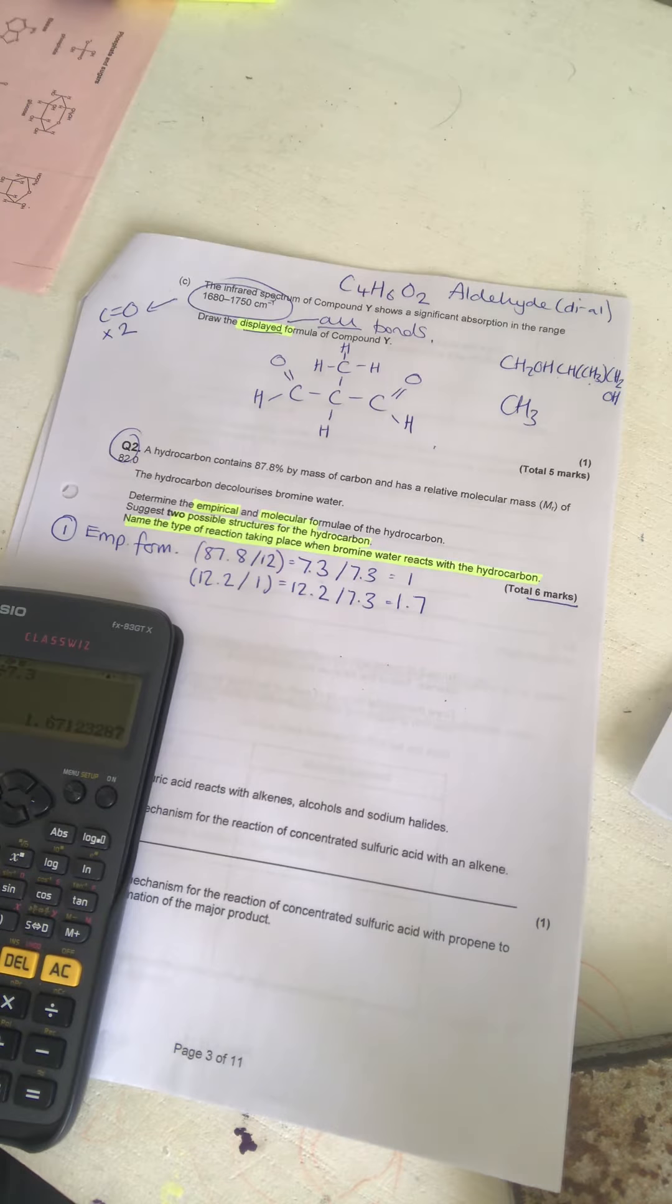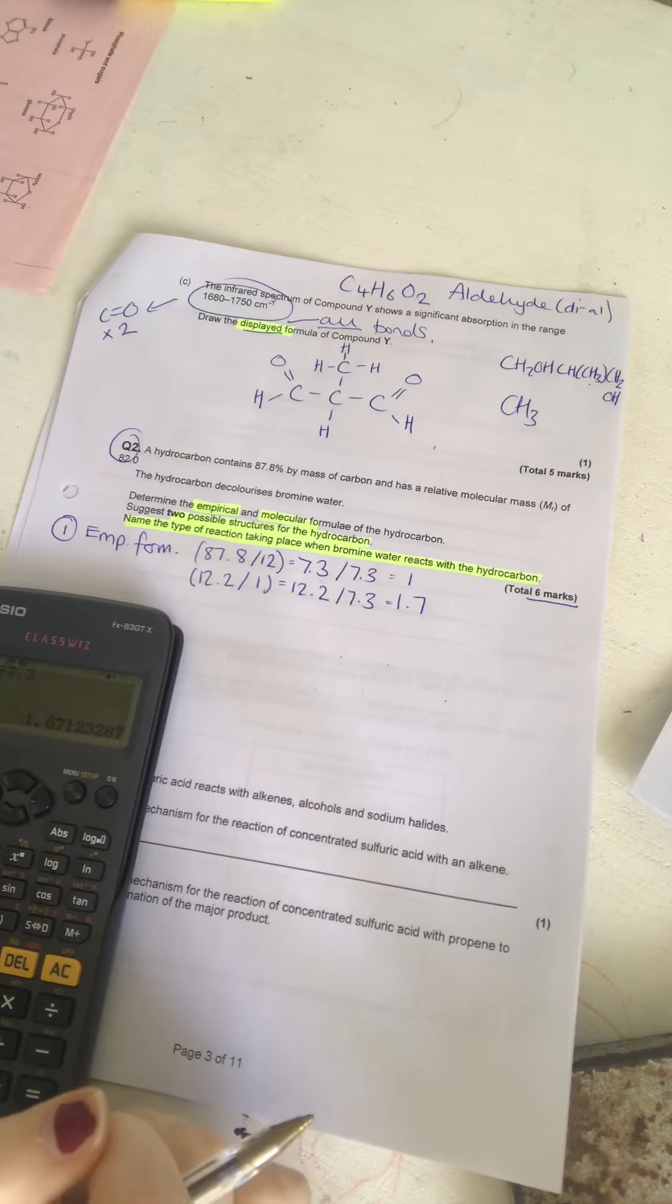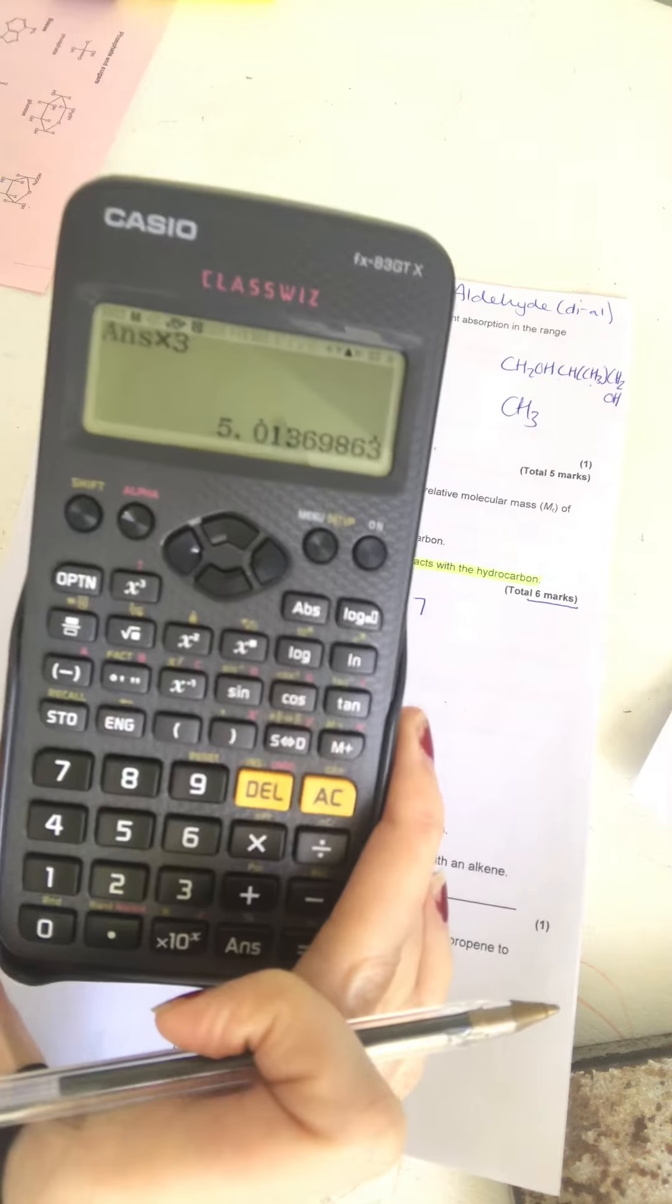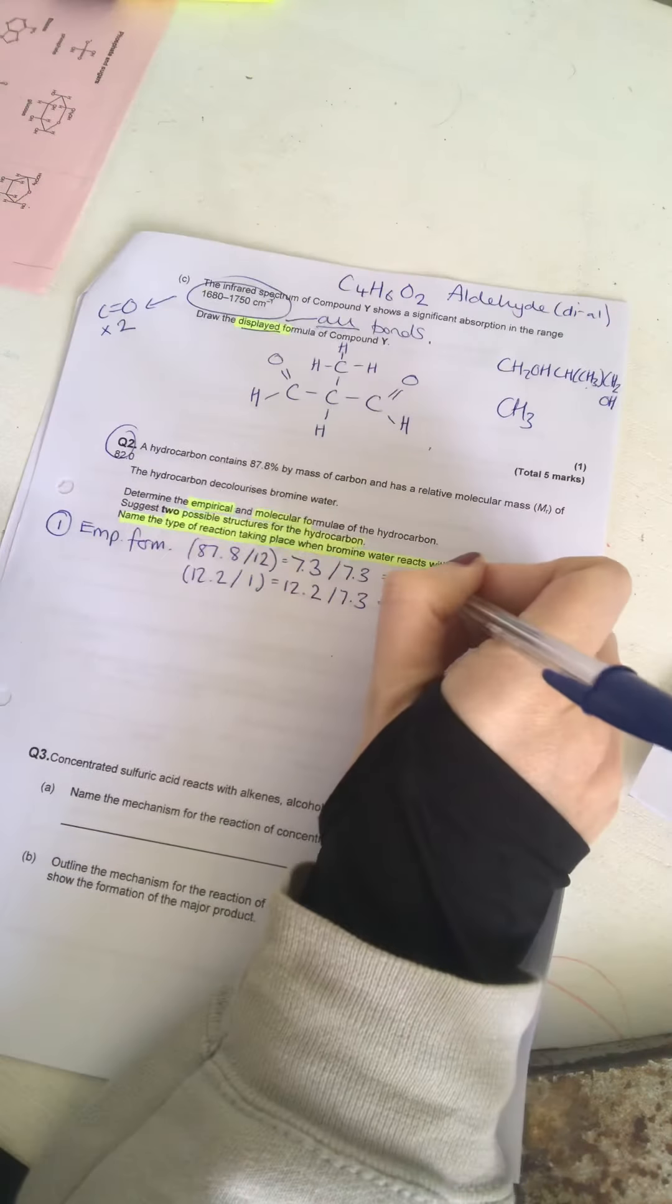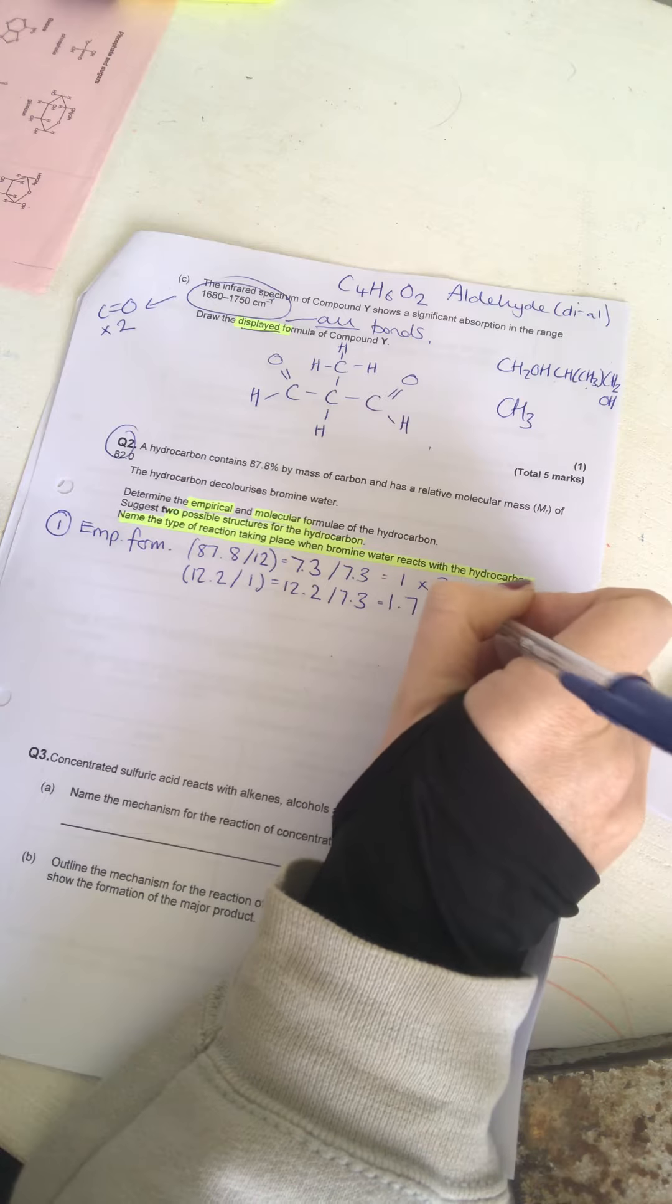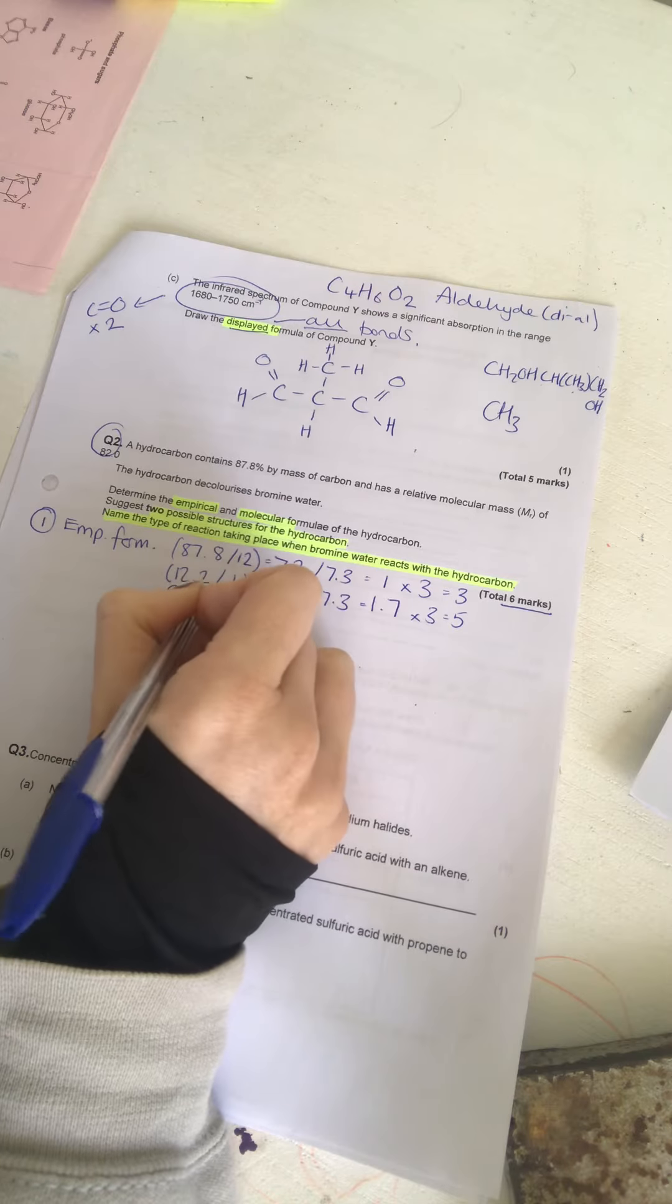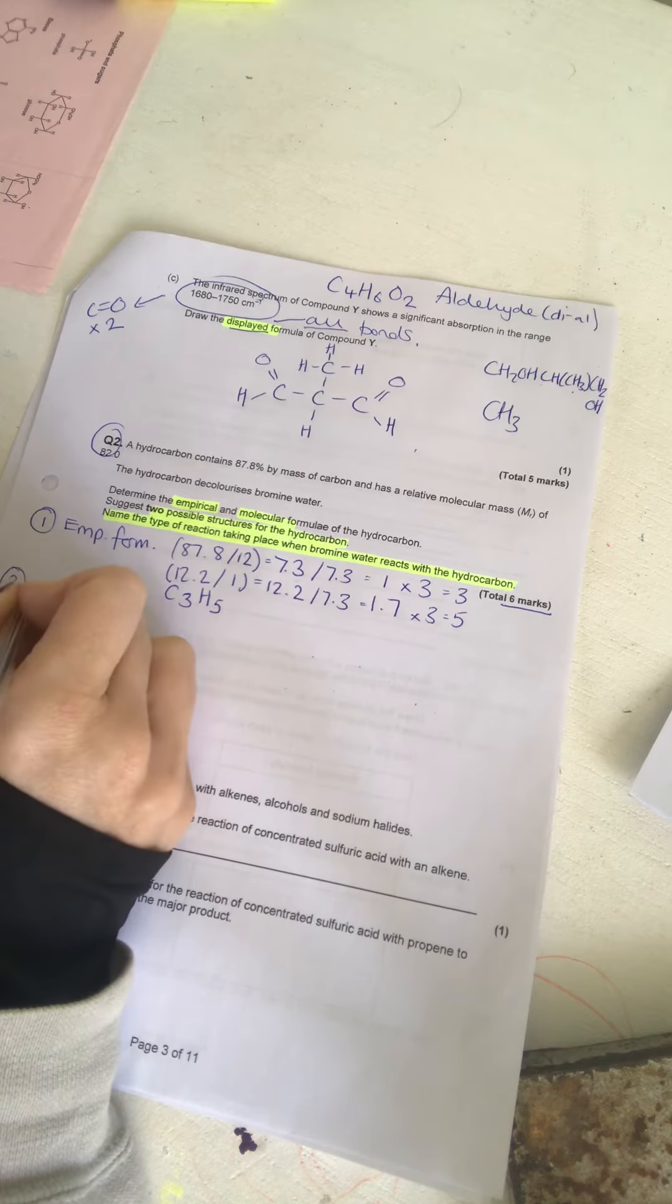Okay. So, we're then going to need to multiply these numbers by something to give us whole numbers. I can see that times 2 isn't going to work with that, but I'm going to try times 3. And yeah, that gives me 5.01, which is basically 5. So, if I times 3, 3 times 3 equals 3 equals 5. So, my empirical formula equals C3H5.